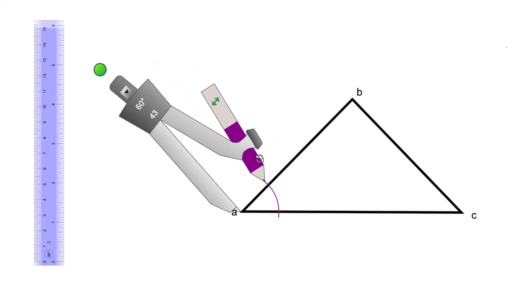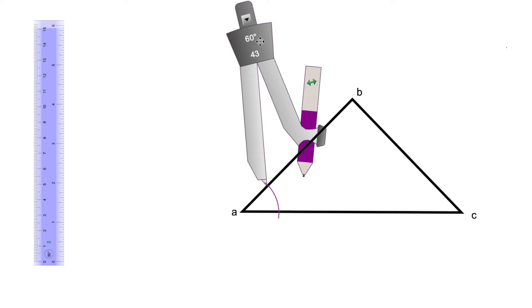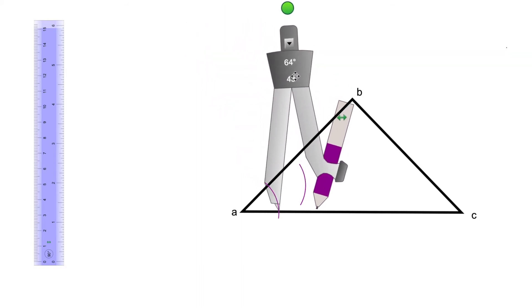You can check the video on how to trace an angle bisector in the description box. You open your compass at whatever length you want, trace an arc from point A, and that arc will give you two intersection points. Then you trace two arcs from those points.